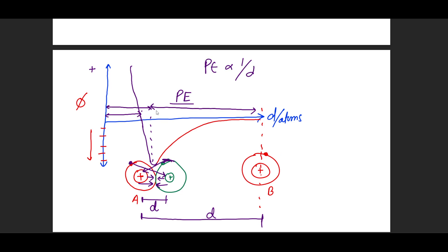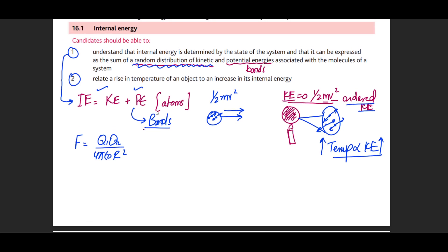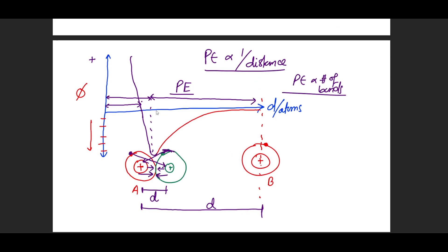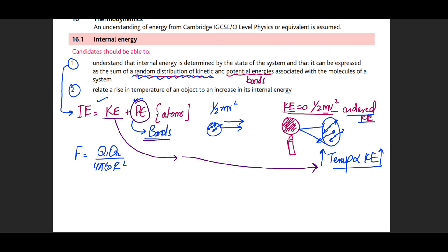Potential energy is inversely proportional to the distance between atoms and depends on the number of intramolecular bonds — bonds that keep atoms in their solid, liquid, or gaseous state. When we refer to potential energy, we always mean the number of bonds between atoms, and kinetic energy refers to the movement of atoms themselves, which is translated into the temperature of the system.